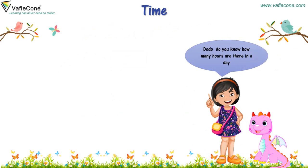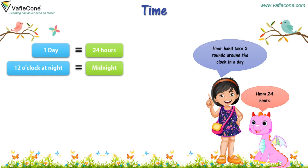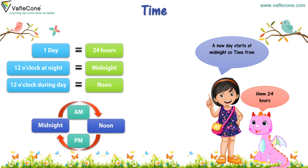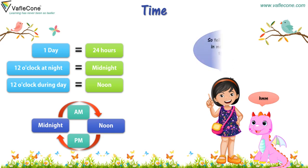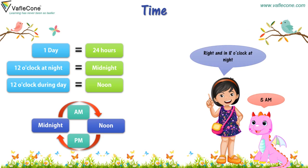Dodo, do you know how many hours are there in a day? 24 hours. The hour hand takes 2 rounds around the clock in a day. 12 o'clock at night is equal to midnight. 12 o'clock during the day is equal to noon. A new day starts at midnight. So time from midnight to noon is a.m., and noon to midnight is p.m. So tell me, if 5 o'clock in the morning, what time will it be? 5 a.m. Right. And 8 o'clock at night? 8 p.m. And 10 o'clock in the morning is a.m. Very good.